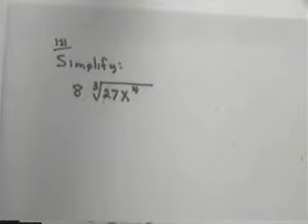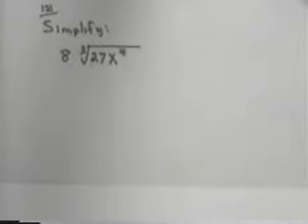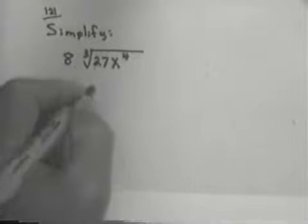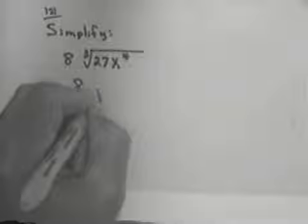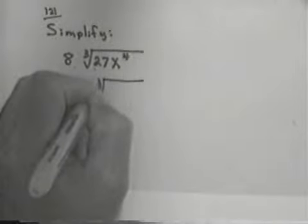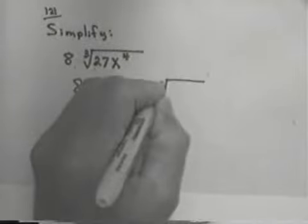Let's look at 8 times the cube root of 27x to the 4th. Well, I just leave the 8, and I break it into what is a cube and what's left.